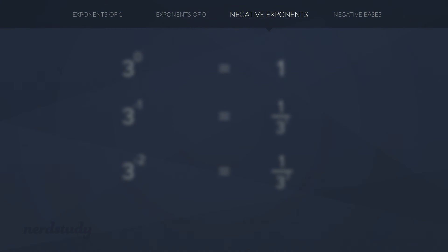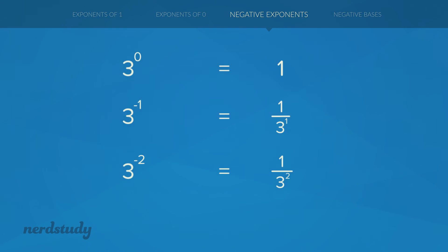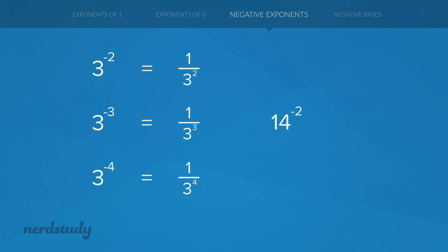So is it the case that when you have a power with a negative exponent, all you have to do is write 1 over that power and drop the negative? The answer is yes. So 3 to the exponent negative 3 equals 1 over 3 to the exponent 3, and 3 to the exponent negative 4 equals 1 over 3 to the exponent 4. And this doesn't just work for base 3 — it works for any number. For example, 14 to the exponent negative 2 equals 1 over 14 to the exponent 2. The power just becomes the denominator with the negative sign dropped.